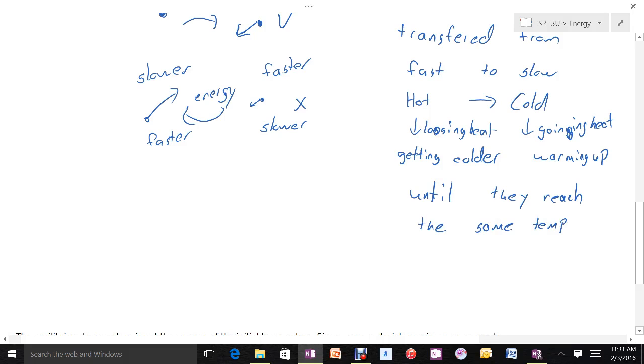This does not mean that in every collision between the two different types of materials, the hot object gets colder and the cold object gets hotter. In fact, sometimes it does go the other way around. But because there are so many particles, all we observe is the average effect. Since one transfer is more likely, that's what we see as the average effect. On average, over time, the two things will come to the same temperature. This is called the equilibrium temperature.